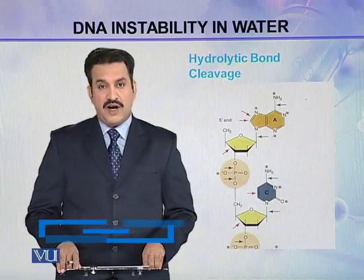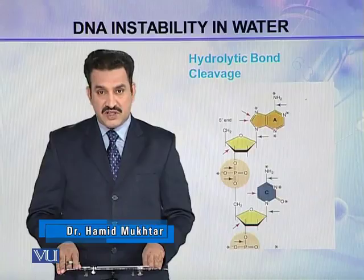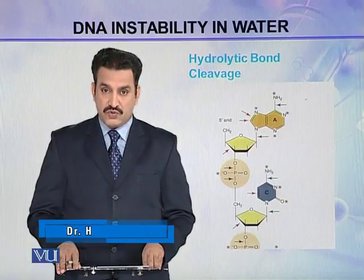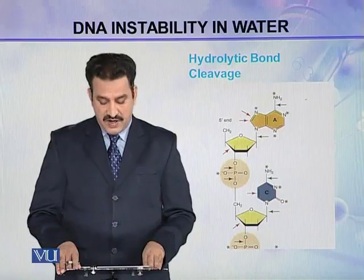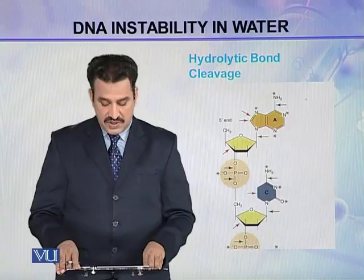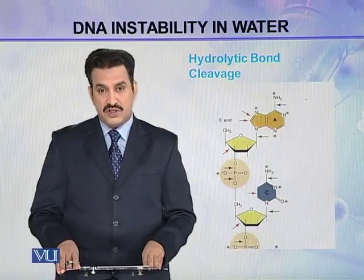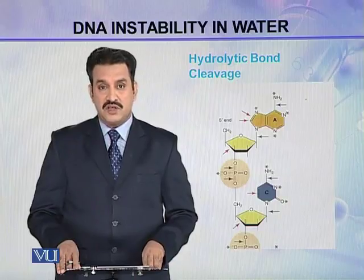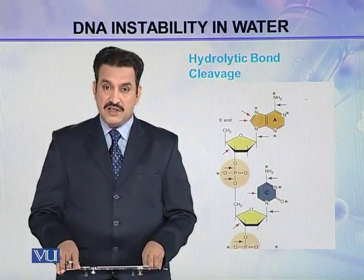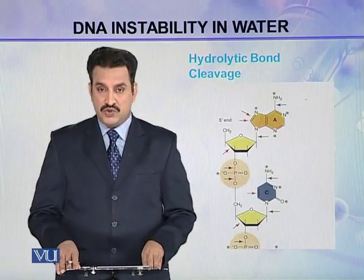In this diagram you can see arrows pointing to different bonds which can be broken by hydrolytic cleavage. Different colors indicate different types of bonds, including phosphodiester bonds, glycosyl bonds, and some other bonds as well.